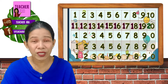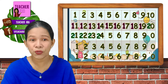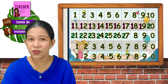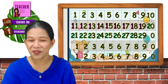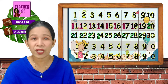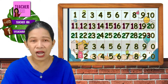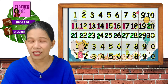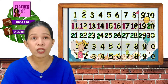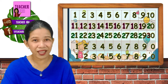Now, let's go to 21 to 30. So, you will just add 2 in front. So now you have numbers 21, 22, 23, 24, 25, 26, 27, 28, 29, and 30.